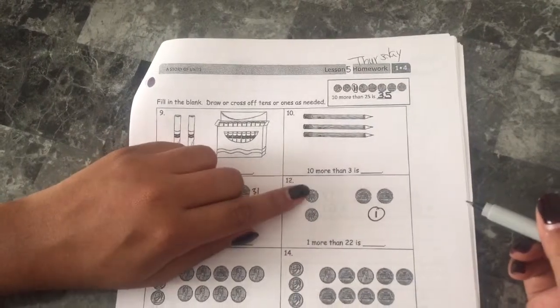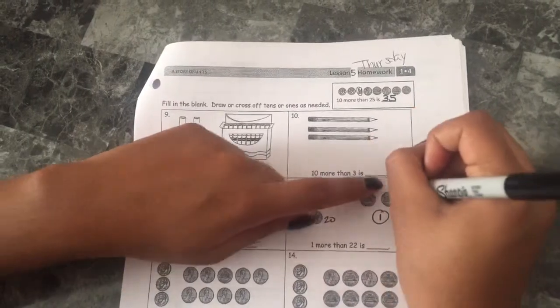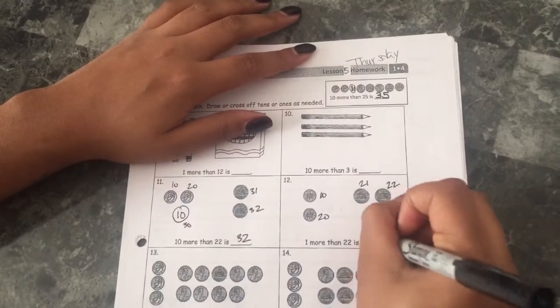So when you count them it's ten, twenty, twenty-one, twenty-two, and twenty-three. One more than 22 is 23.